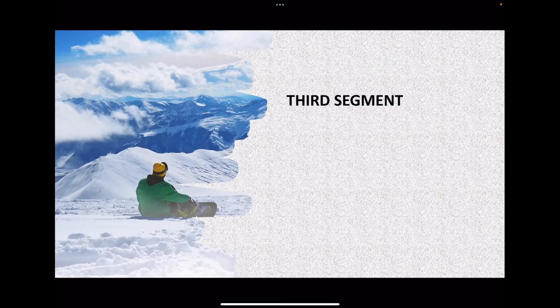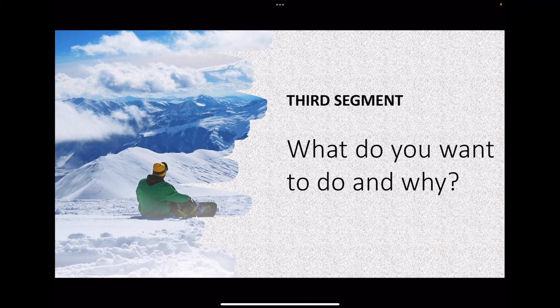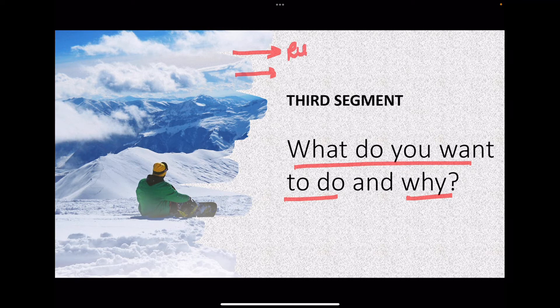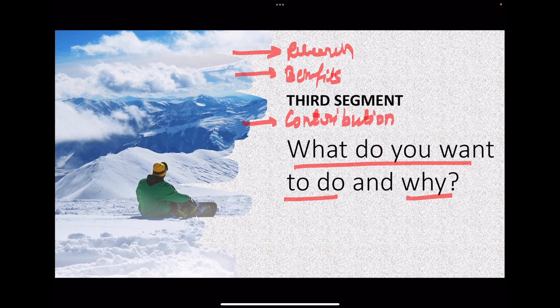In the third segment, you talk about what you want to do and why. If you have any idea regarding the research you are going to do, talk about that — discuss the research, its benefits, and your contribution. This means what benefits your research will have and how much you will contribute. Cover all these things in this segment. This is the basic structure: the SOP is divided into three segments and should be only one page.